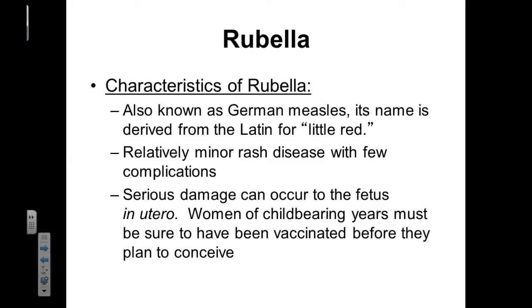Rubella is closely linked to measles. Rubella is sometimes known as German measles — in Latin, the name rubella means 'little red.' This rubella results in a relatively minor rash with very few complications. However, if the patient becomes infected with rubella while they are in utero, there can be serious damage and birth defects that can occur, both physical and neurological.